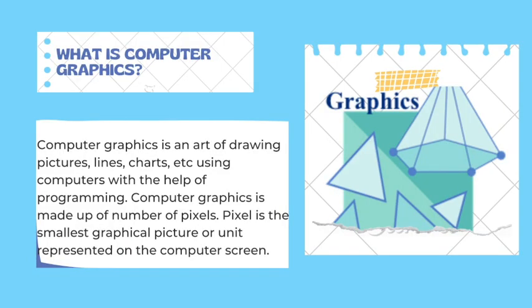What is computer graphics? Computer graphics is an art of drawing pictures, lines, and charts using a computer with the help of a program. Computer graphics is made up of a number of pixels. A pixel is the smallest graphical unit represented on the computer screen.